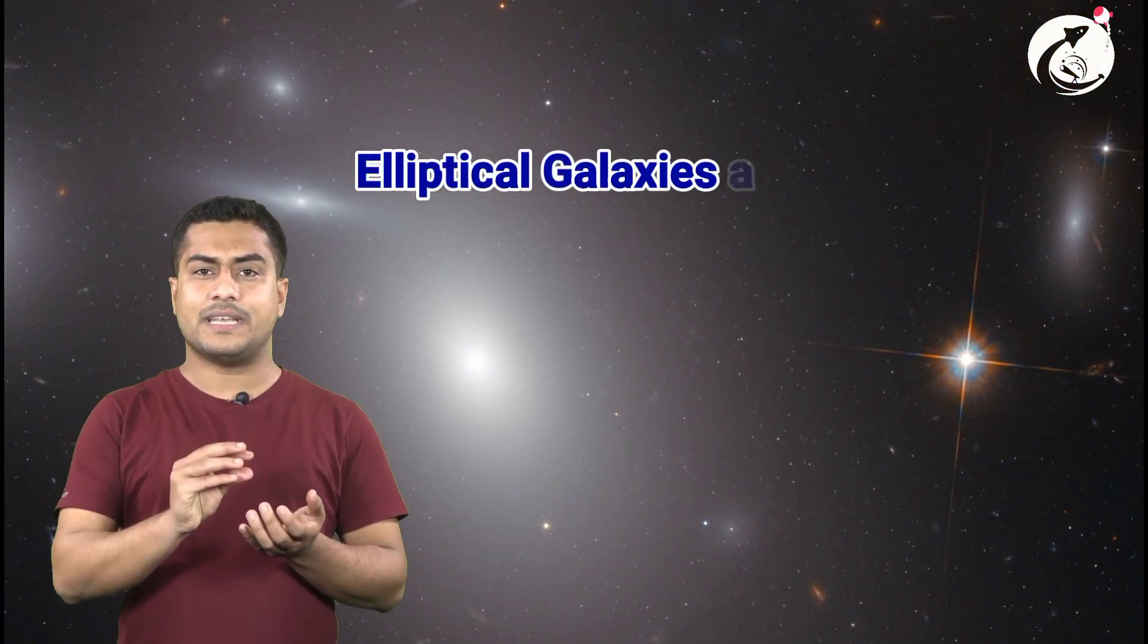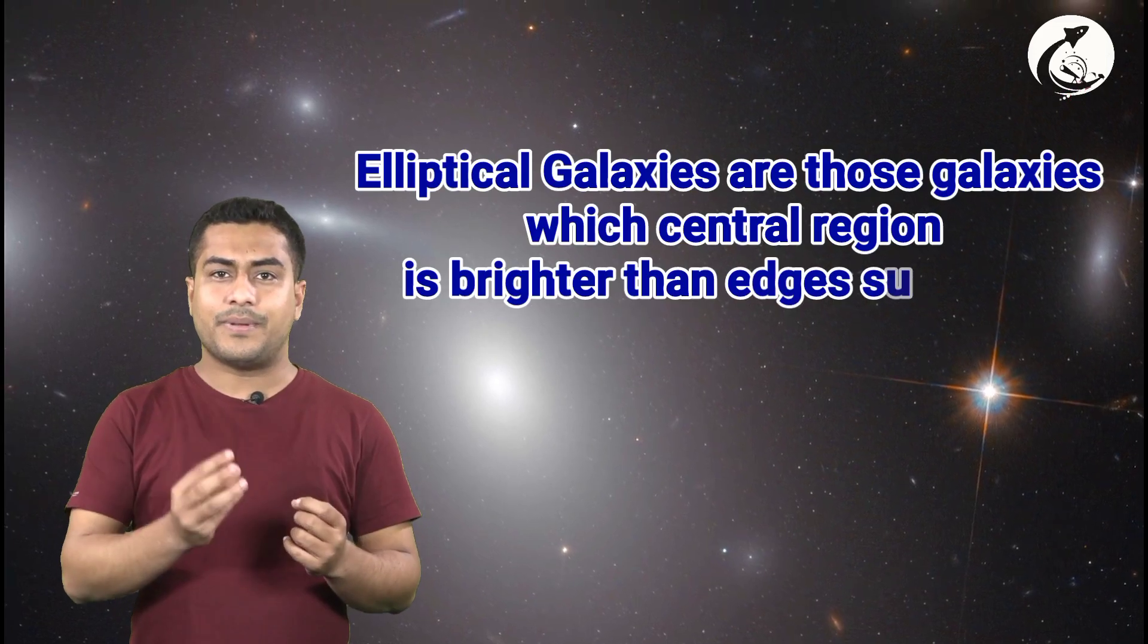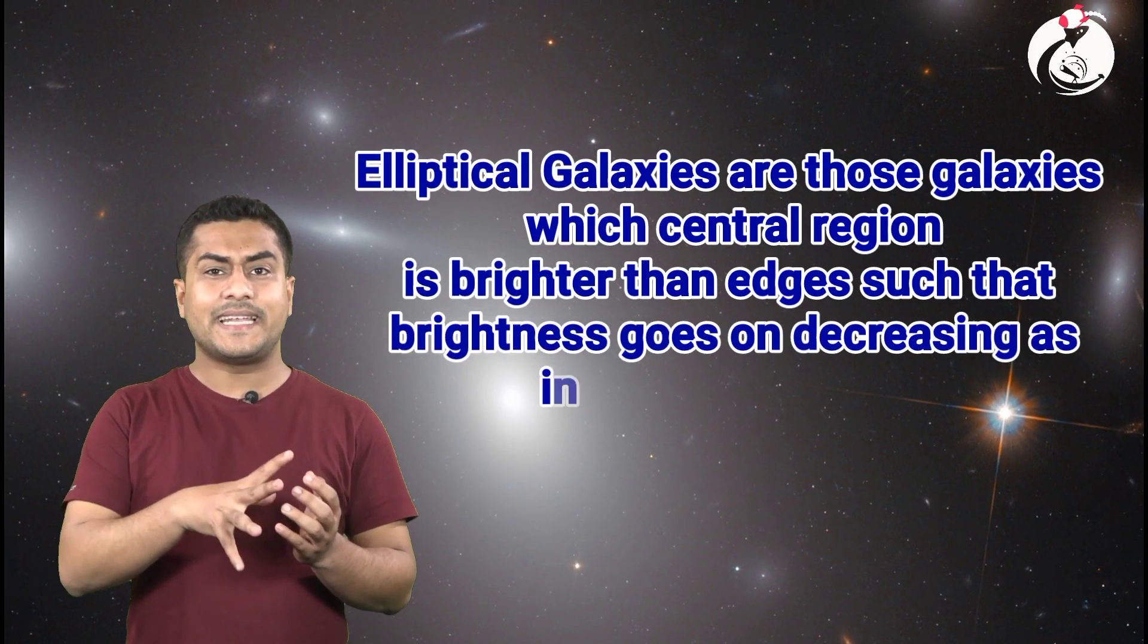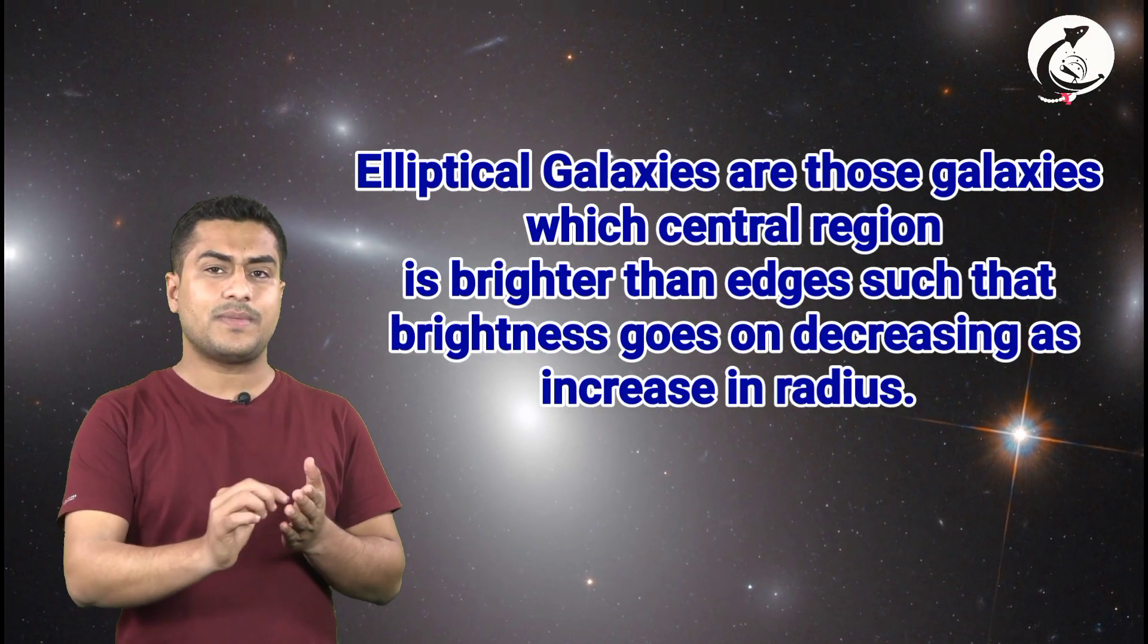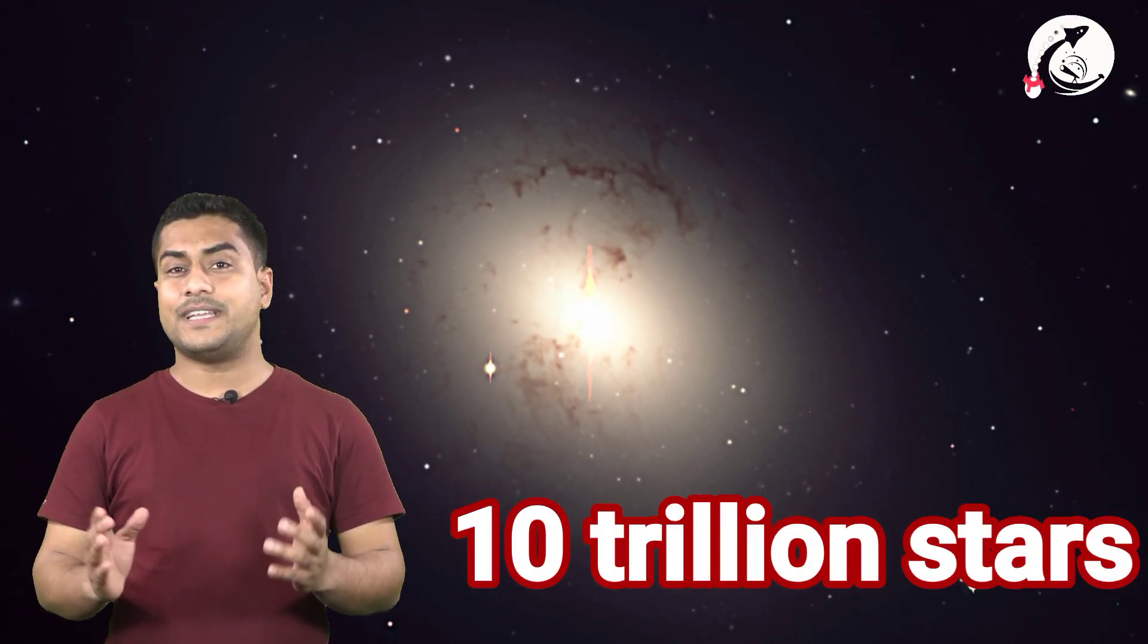Elliptical galaxies are a kind of galaxies in which the central region is brighter than the edges. The bright region gradually decreases as the radius of the galaxy increases. This type of galaxies contain 10 trillion stars in them. Such type of galaxies are around 20% among our nearby galaxies. These type of galaxies contain less amount of dust and gas. That's why these type of galaxies do not bear young stars.